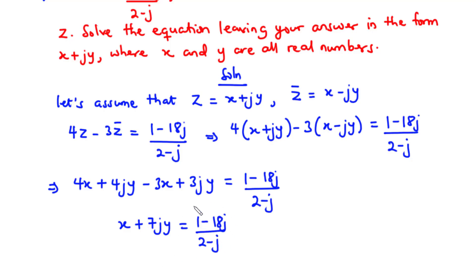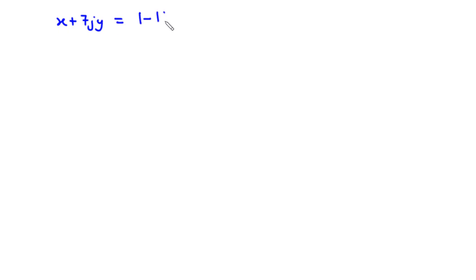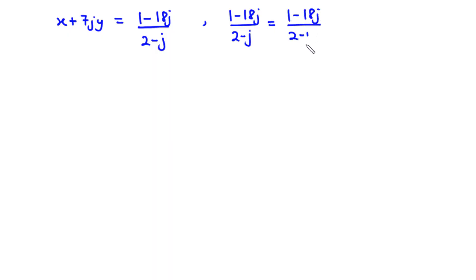On the right-hand side, we have a complex number divided by another complex number. When dividing complex numbers, we multiply both numerator and denominator by the complex conjugate of the denominator. So we have 1 minus 18j divided by 2 minus j, multiplied by 2 plus j over 2 plus j. Expanding the numerator: 1 times (2 plus j) minus 18j times (2 plus j).